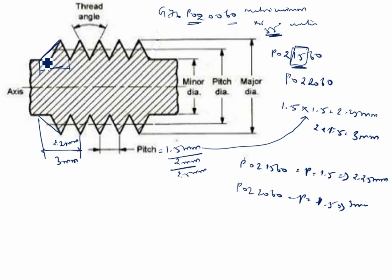You see, the tool would run off the part over a distance of 2.25 mm or 3 mm. If pitch value is 2, the value will change.